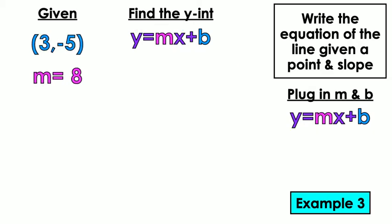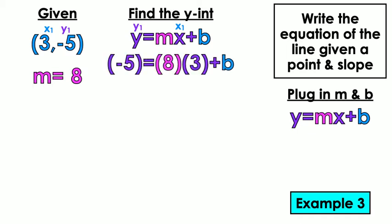3 comma negative 5. M equals 8. Label X1 and Y1, because that's how you're going to know what numbers go into the equation and where they go into the equation. So Y1 is negative 5. So negative 5 equals M is 8. 8 parentheses times 3, because X1 is 3, plus B.